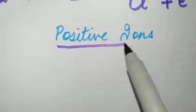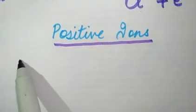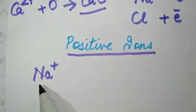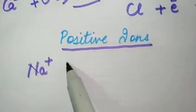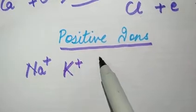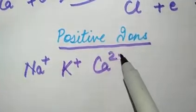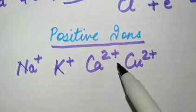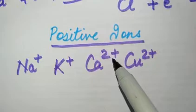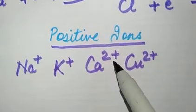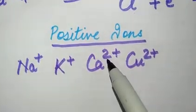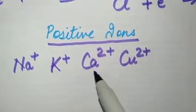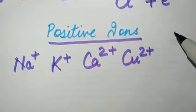There is a table of positive ions given in your book. You need to learn these ions and their charges. The positive ions include: sodium ion (Na⁺), potassium (K⁺), calcium (Ca²⁺), and copper (Cu²⁺). You need to learn the magnitude and nature of the charge on each.